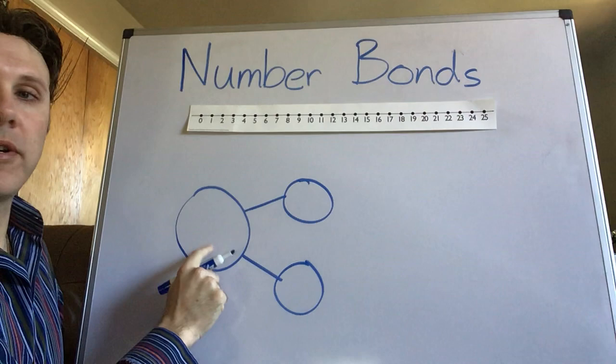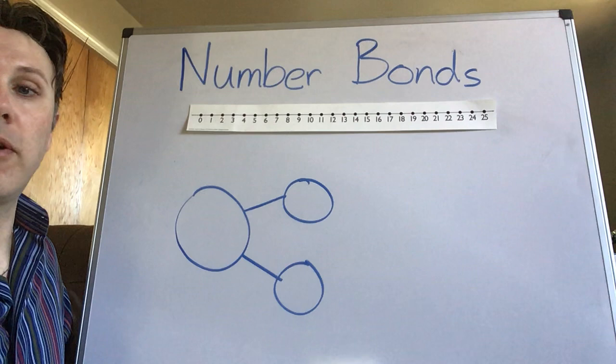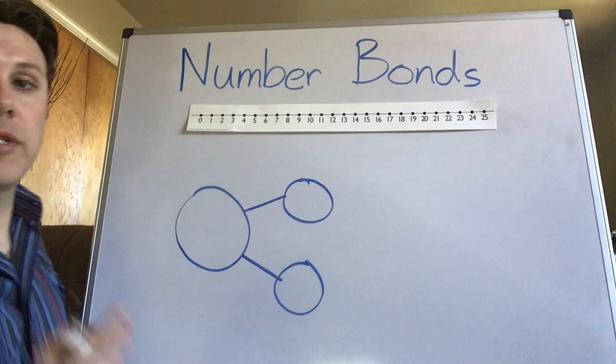Now this circle is going to be where the big number goes and then these circles are going to be where the two numbers that create this number.